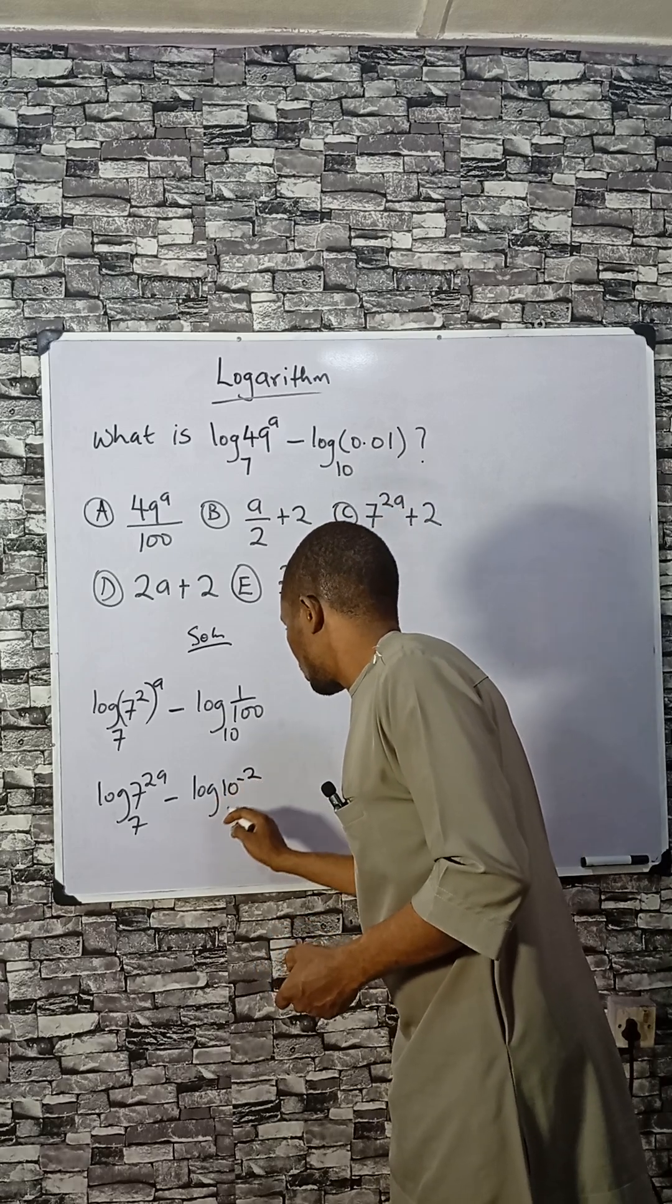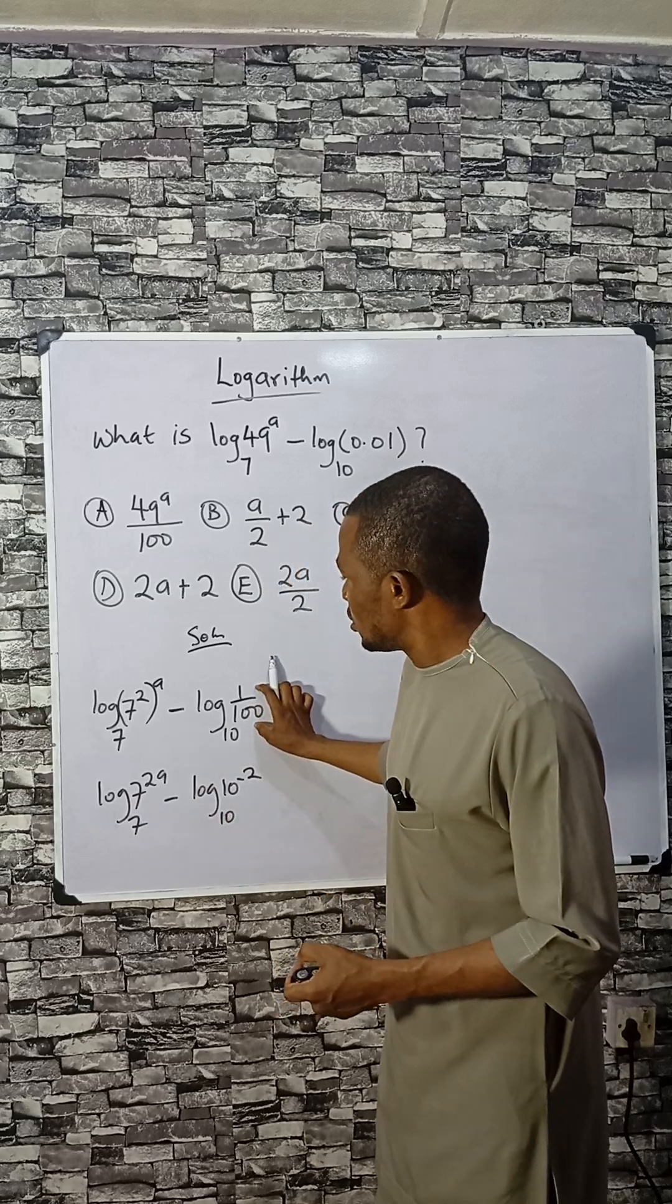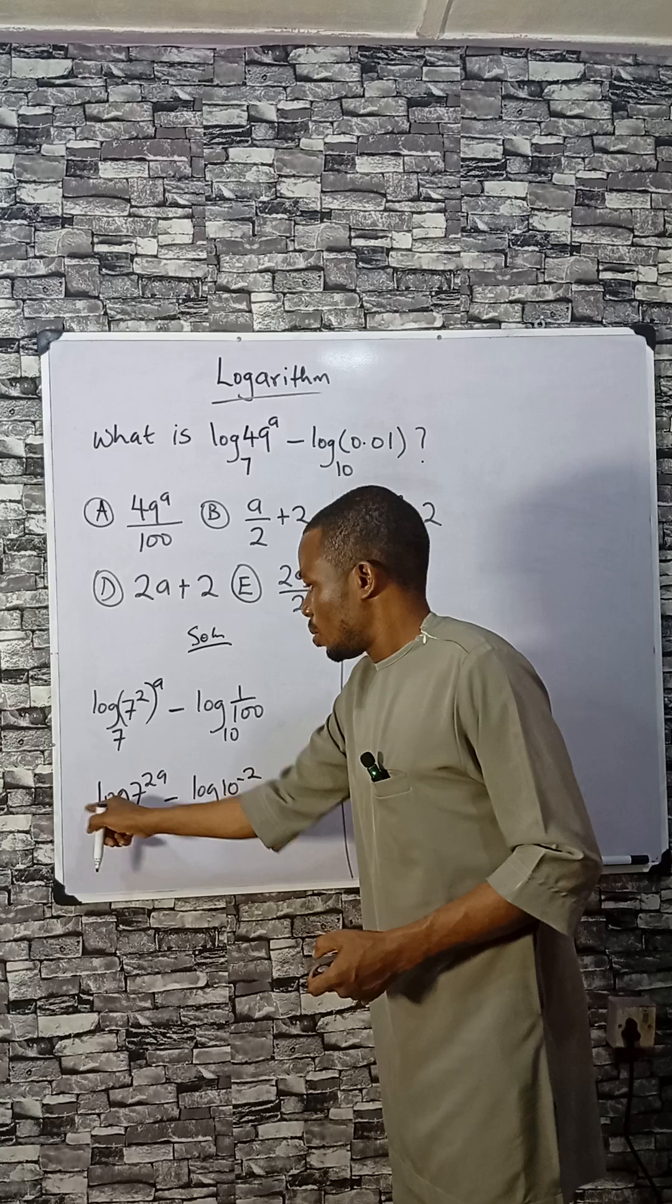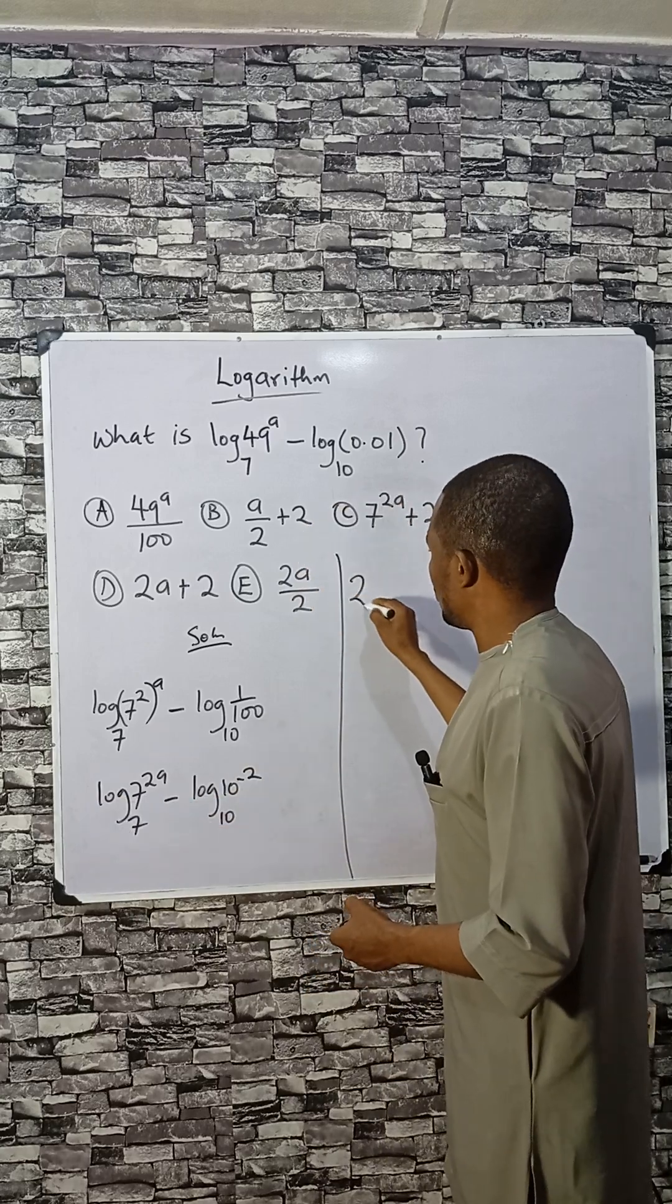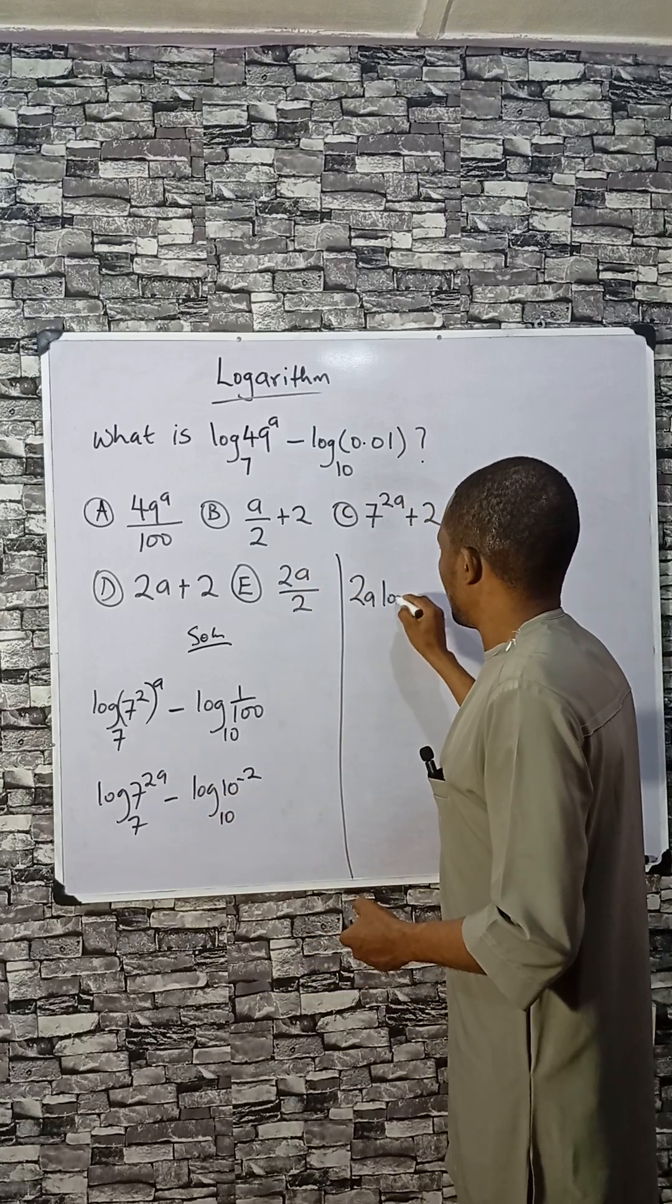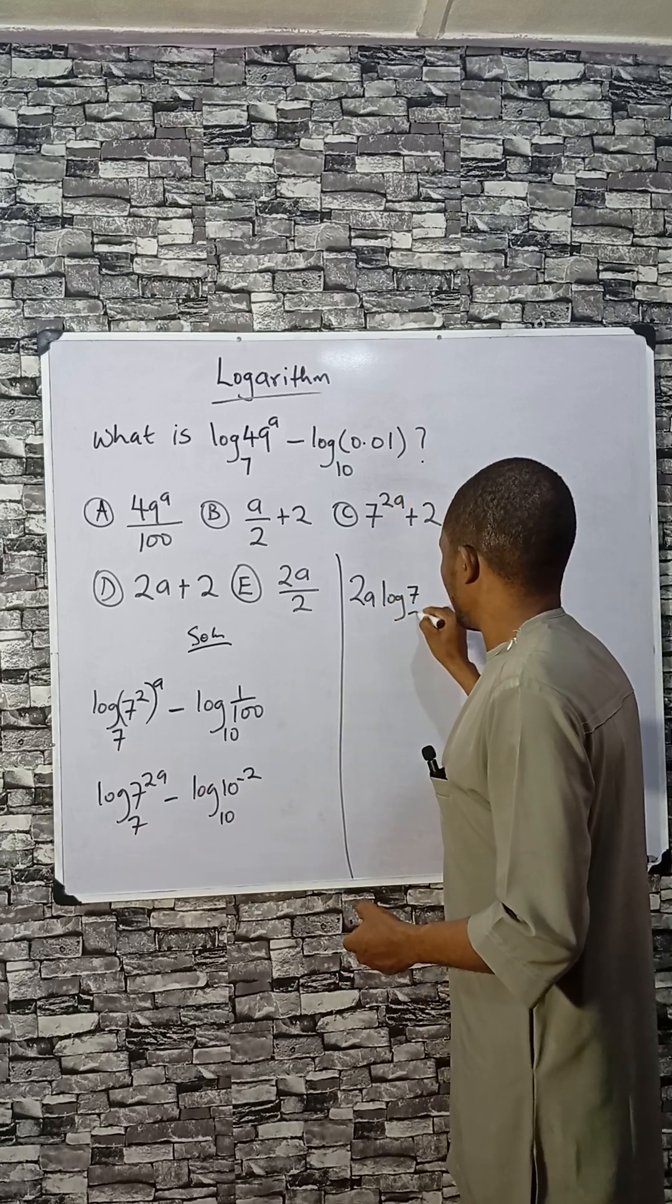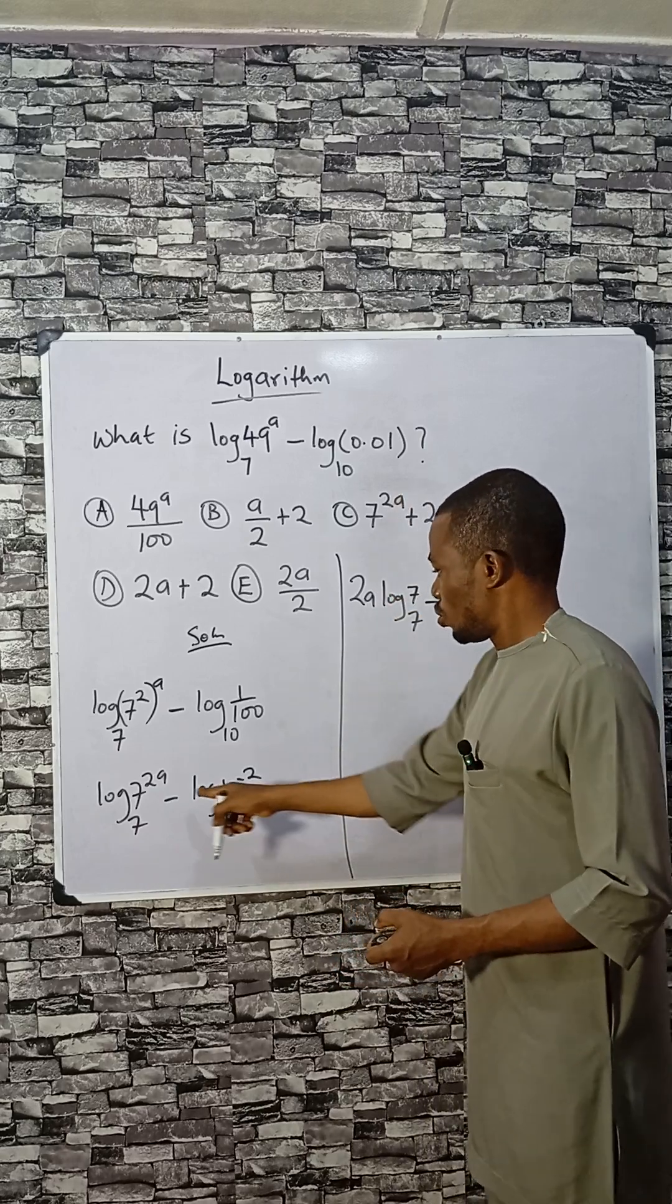This can be expressed as this. So this will go to the back of this log. That will be 2a log 7 by 7, which is 1, minus the same thing. This will also come to the side. You open a bracket, minus is coming with minus, minus 2 log 10 base 10. Log 7 by 7 is 1, so 2a times 1 minus the minus is plus, so plus 2 log 10.